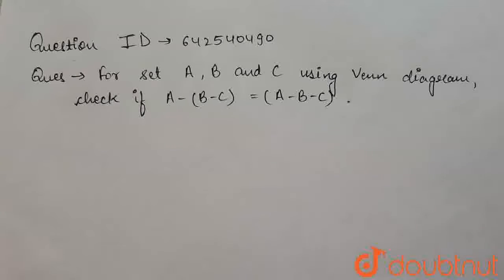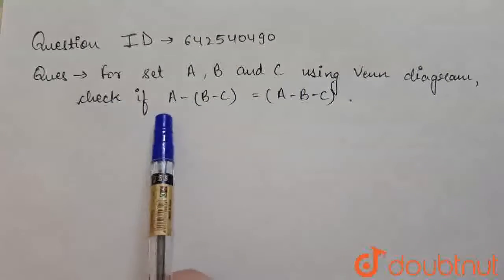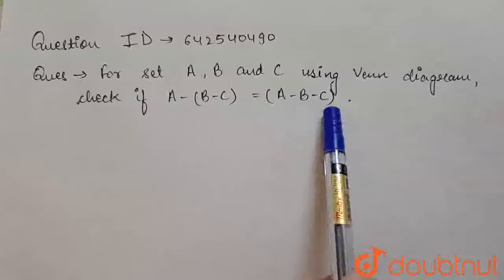Friends, so our today's question is: for set A, B and C, using Venn Diagram, we have to check whether A minus B minus C is equal to A minus B minus C.